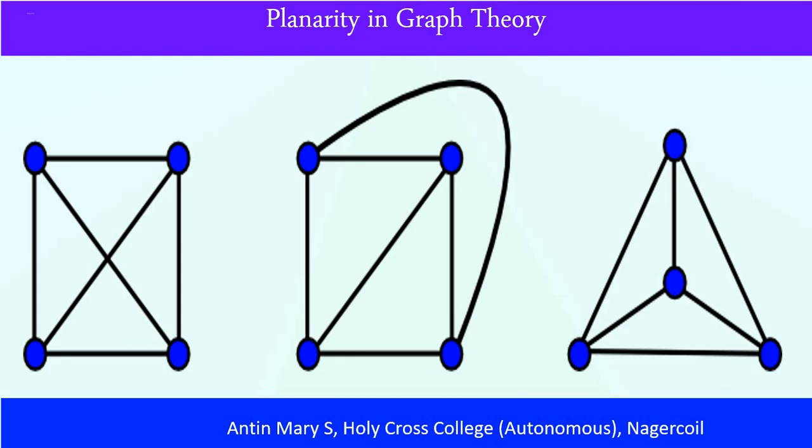Here you have a first graph which is actually a planar graph but it is not drawn as a plane graph. All these graphs are planar graphs. The first one is a planar graph, but the second and third you can name as plane graphs because they are drawn so that no two edges cross.